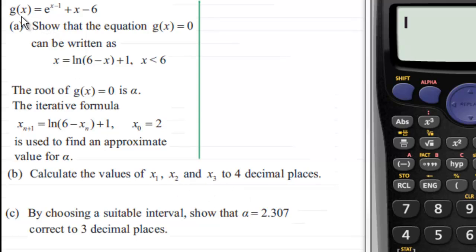But first of all, what we've got is this function g(x) which equals e to the power x minus 1 plus x minus 6. In the first part, we've got to show that the equation g(x) equals 0 can be written as x equals the natural log of 6 minus x and then plus 1, where x is less than 6.